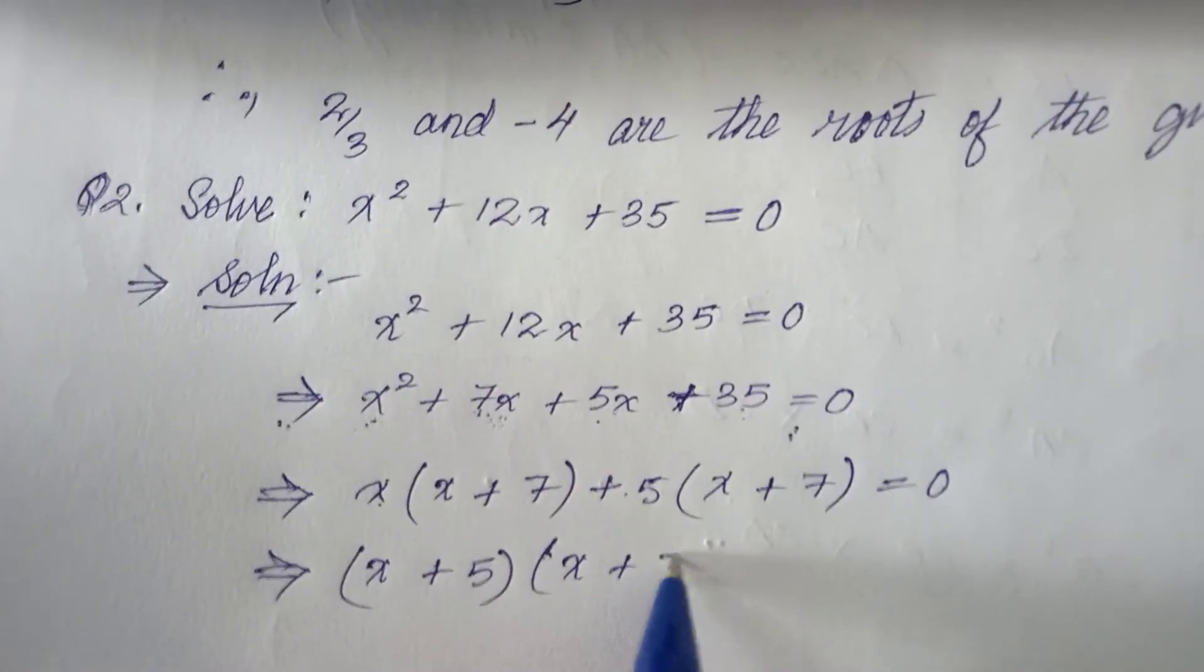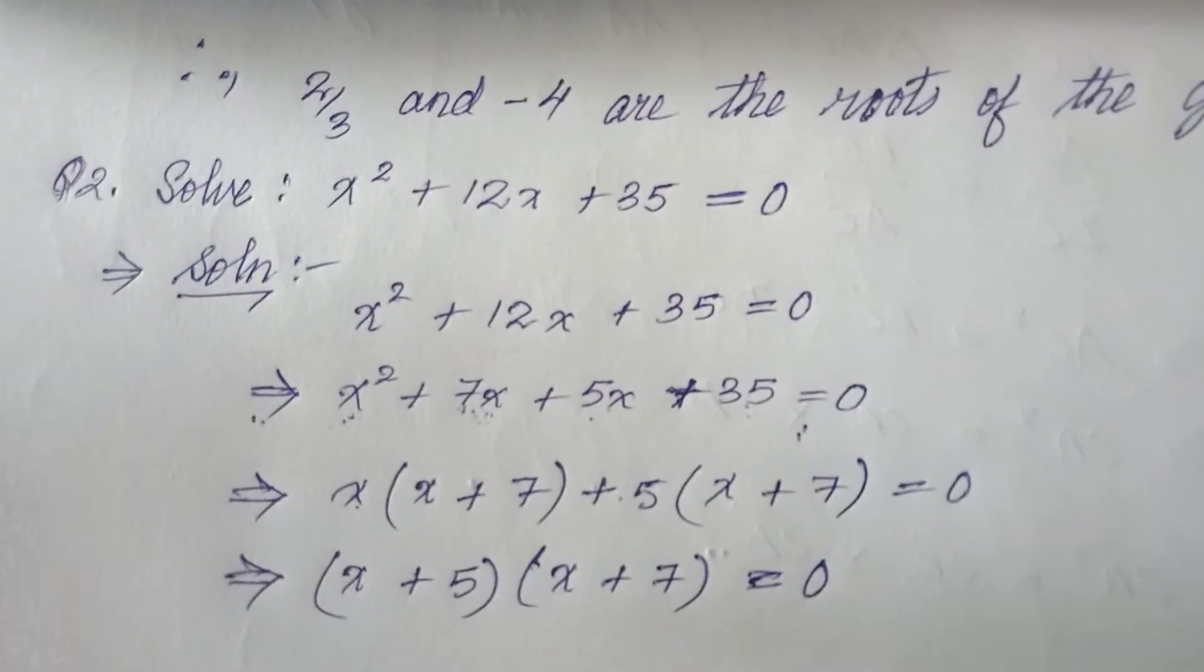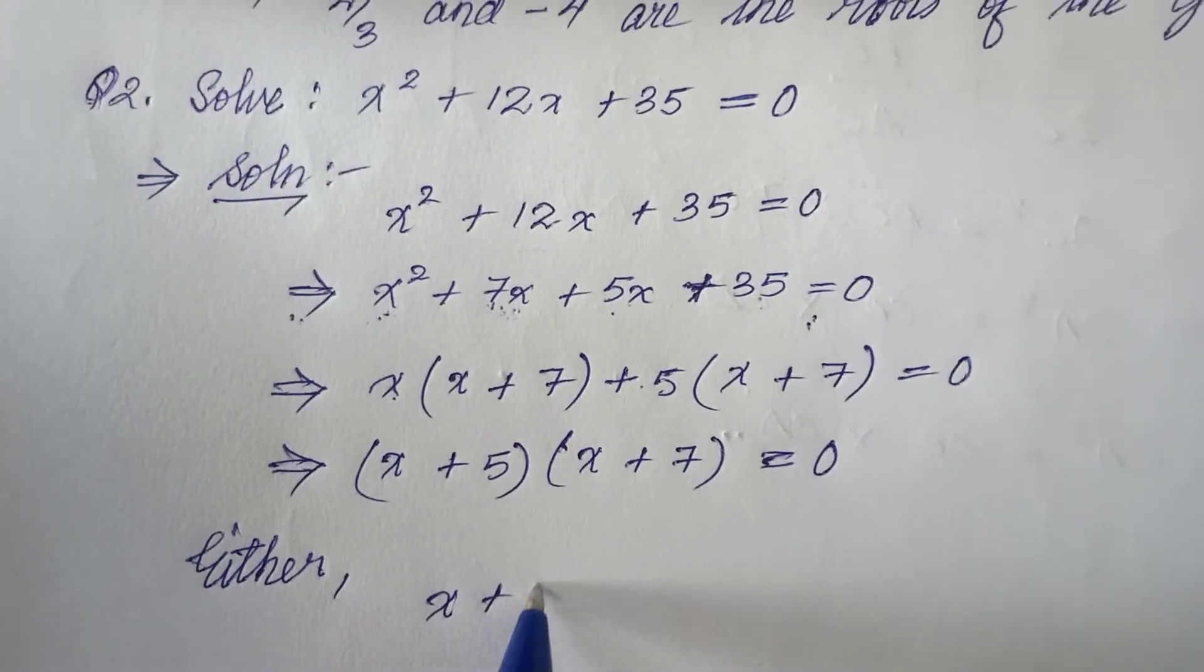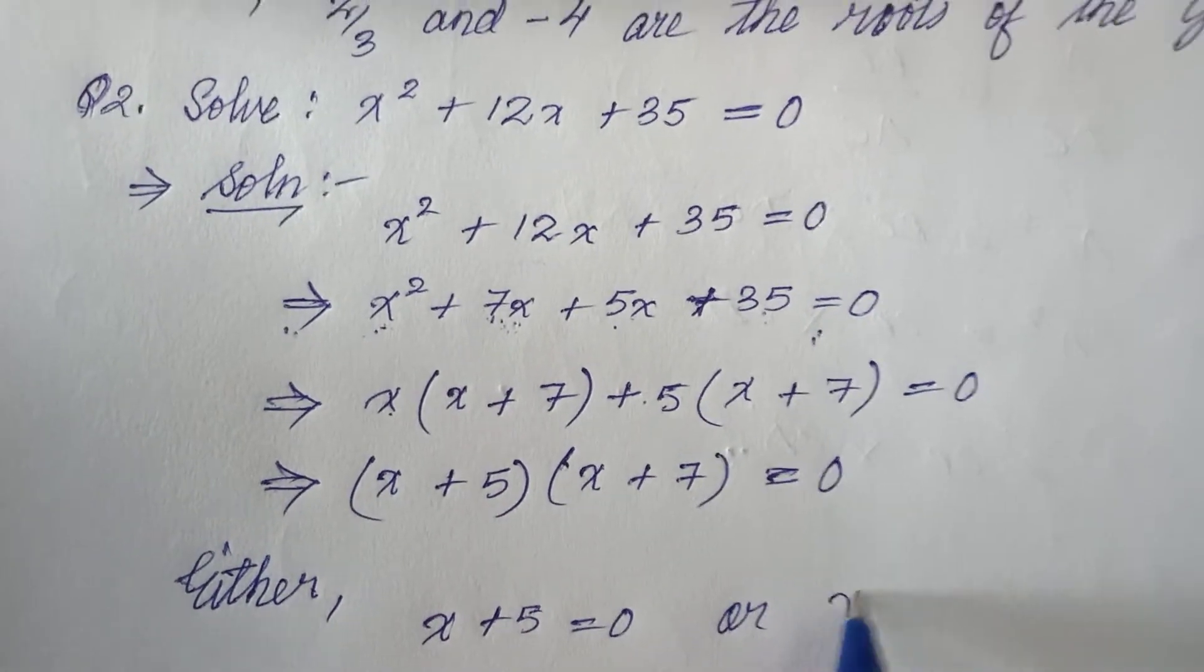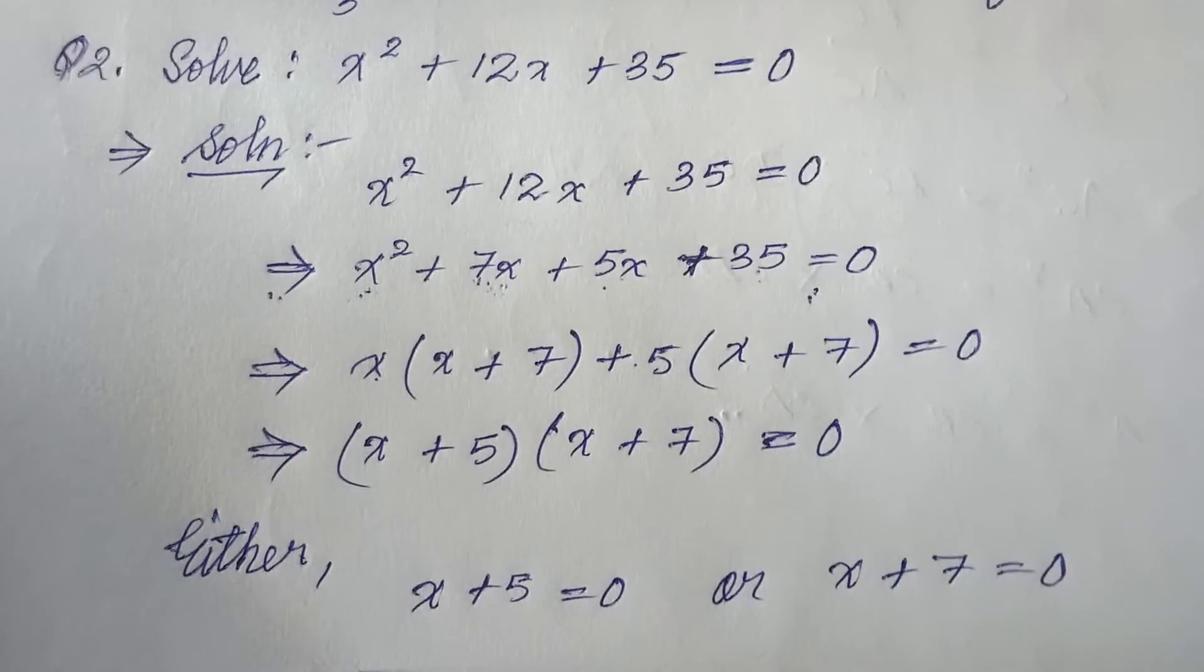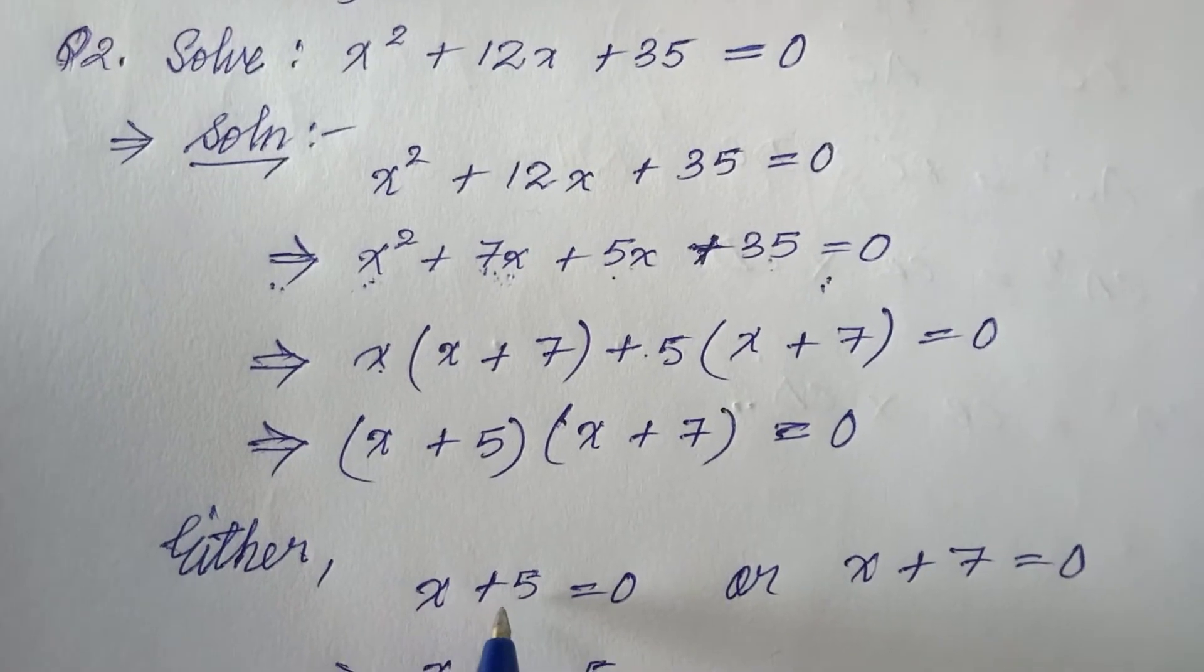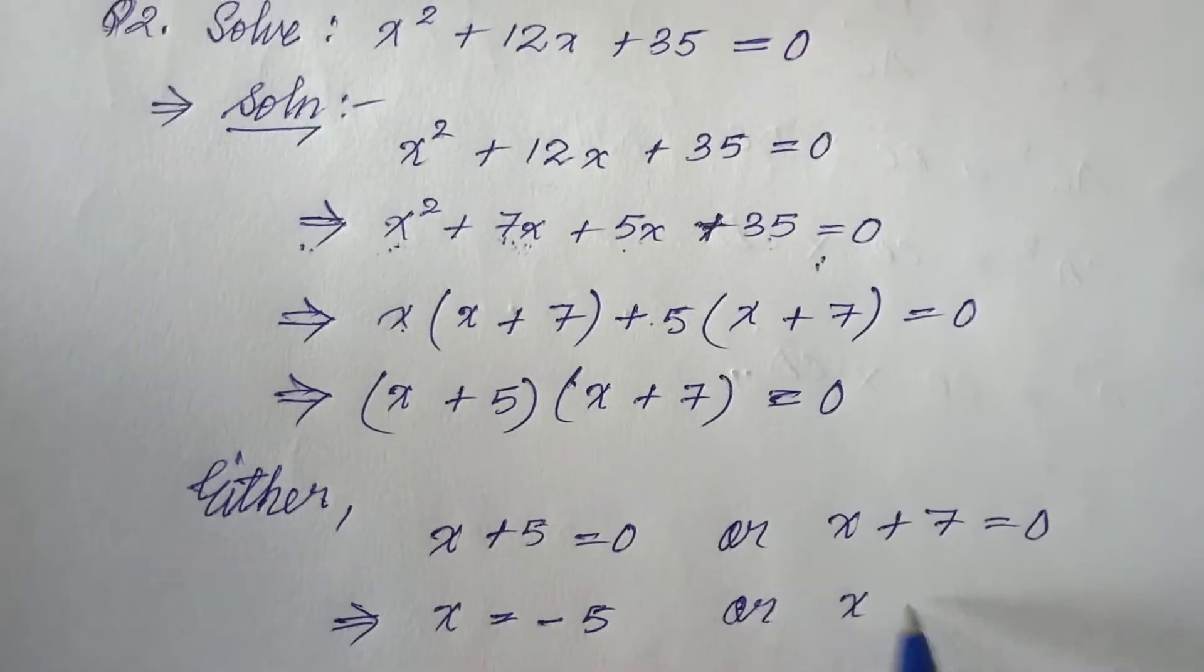Then I have to say either x + 5 = 0 or x + 7 = 0. So here x = -5 when 5 moves to the right hand side it becomes negative 5, or x = -7.